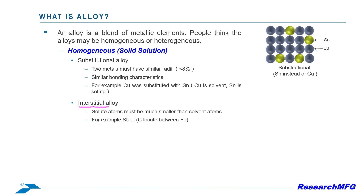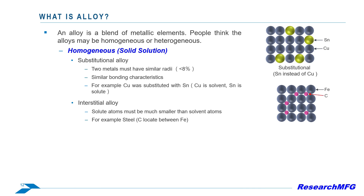In the interstitial mechanism, one atom is significantly smaller and doesn't substitute for the other type in the crystal matrix. Instead, smaller atoms occupy spaces between matrix atoms, forming an interstitial alloy. Steel is a prime example, where small carbon atoms fill interstices in the iron matrix, influencing hardness and brittleness.